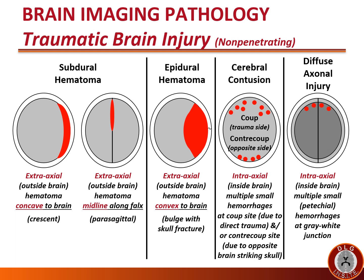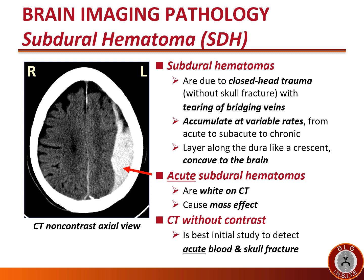This non-contrast CT shows a left subdural hematoma. Subdural hematomas are due to closed head trauma without skull fracture, with tearing of bridging veins. They accumulate at variable rates — acute to subacute to chronic — and layer along the dura like a crescent concave to the brain when lateral. Acute subdural hematomas are white on CT and cause mass effect. CT without contrast is the best initial study to detect acute blood and determine if there is a skull fracture, though subdural hematomas are generally not associated with skull fractures.